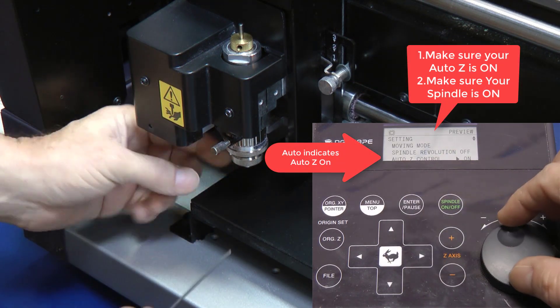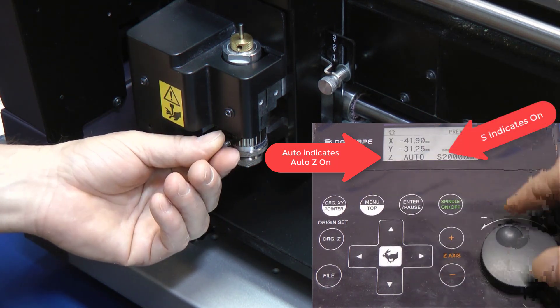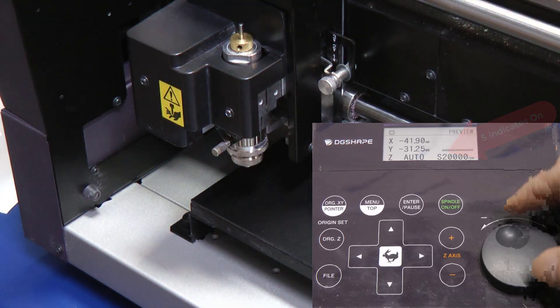On the control panel make sure Auto Z is set. Auto will indicate that it is turned on. Let's also make sure your spindle is turned on. The S indicates on.